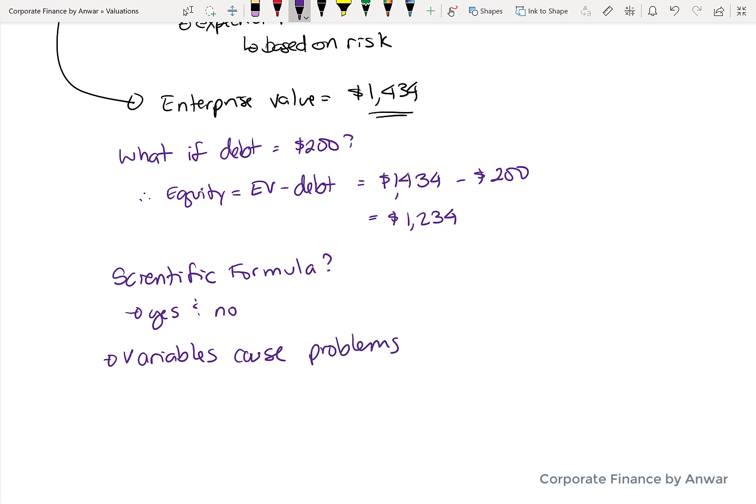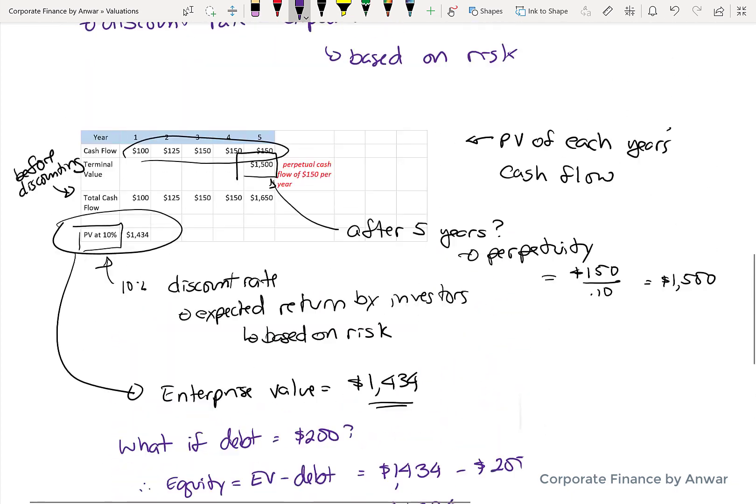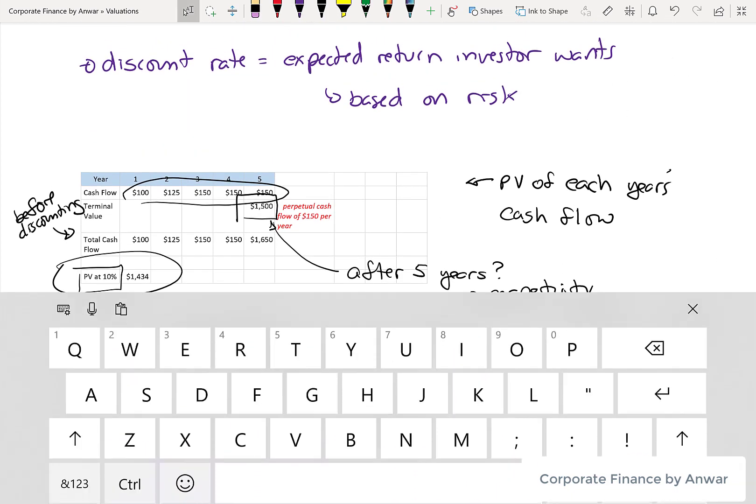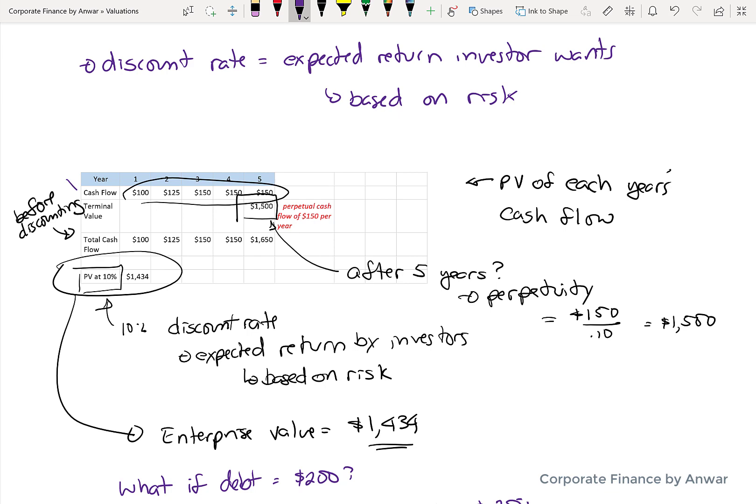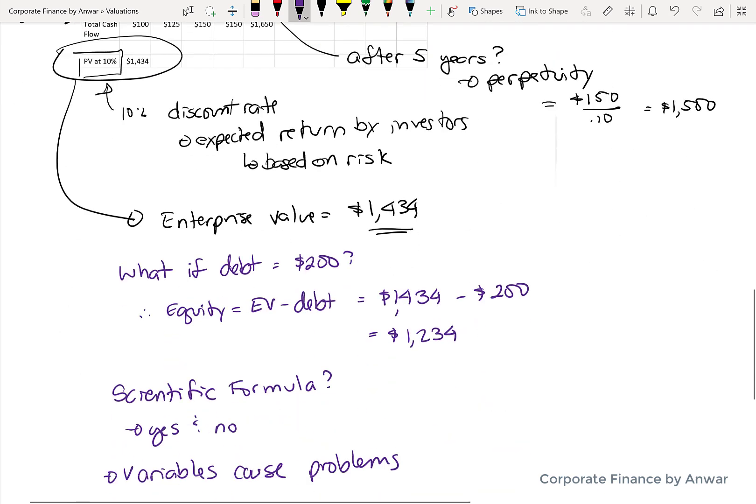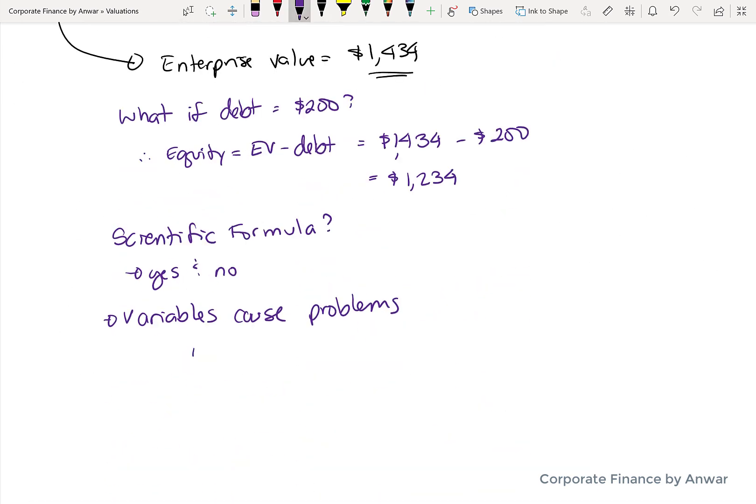And that's the question mark in all of these types of scenarios: how accurate are the variables? If the variables are not accurate, then as a result of all of that, you'll have an answer that is not accurate.